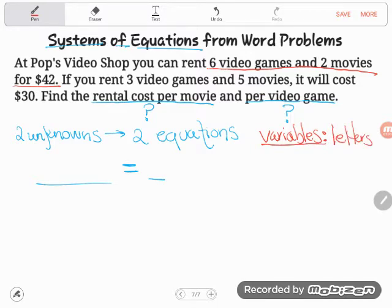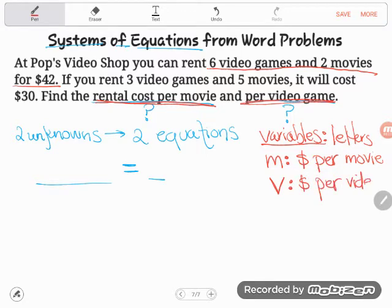Letters stand in for unknowns. Well, look, there were two things I didn't know. I don't know the rental cost per movie. I want a letter to stand in for that first thing that we don't know. Well, what would be a good letter? I'm going to use M. And that will help me remember that every time I see an M, it means the cost per movie. And then there's one more thing I don't know. I don't know the cost per video game. So I'll use a different letter, maybe a V this time, to stand for the cost per video game. And now that I have my two variables to represent my two unknowns, I can go ahead and write those two equations.